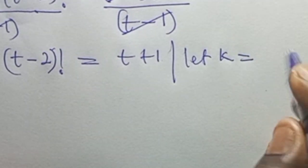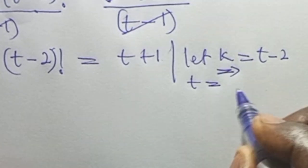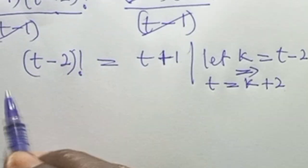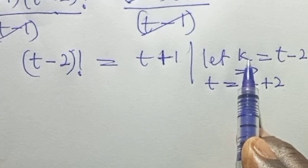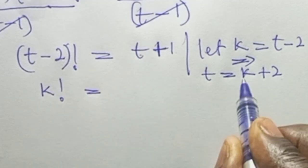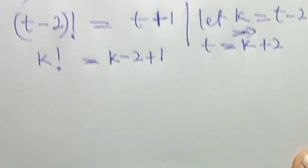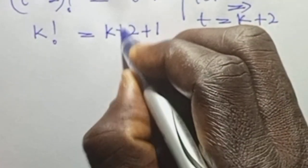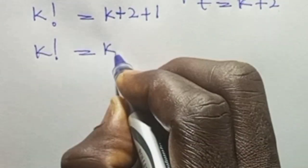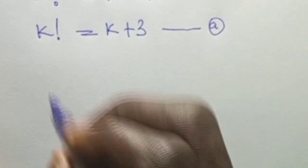For the next step, let k equal t minus 2, which means t equals k plus 2. Substituting, (t minus 2) becomes k, and t plus 1 becomes k plus 2 plus 1 equals k plus 3. So k factorial equals k plus 3. Call this equation A.